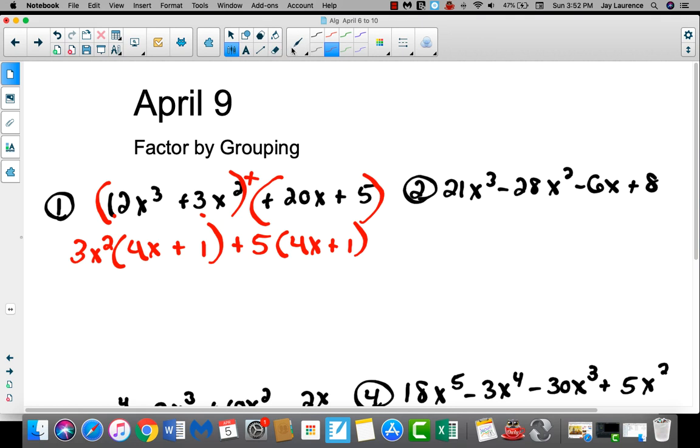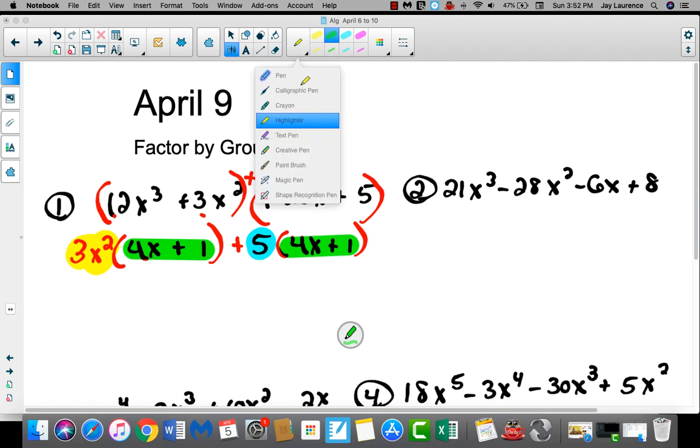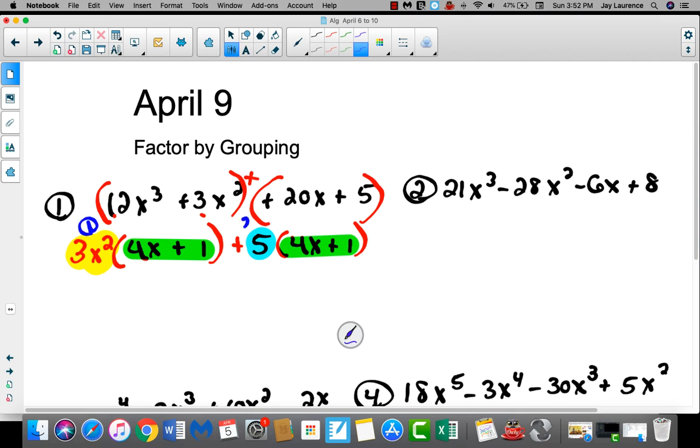Now, if you look, the factors of this first group are the 3x squared and the 4x plus 1. And then over here in the second group, there's a 5, but then there's another 4x plus 1. It's a common factor. I'm going to factor it out again. Remember, I said GCF three times. Here I GCF'd once, now I GCF'd twice.